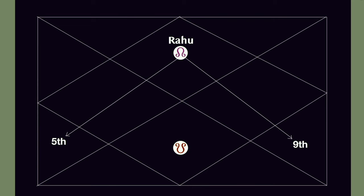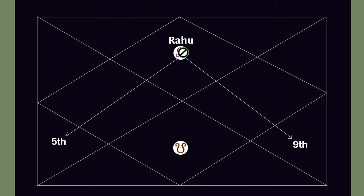Looking at the chart, you see Rahu has fifth and ninth aspects. This is the fifth aspect of Rahu. We are taking the first and seventh axis as an example — this is a blank chart, any chart. So if Rahu sits here, its fifth aspect is looking at the fifth house, and its ninth aspect is looking at the ninth house from the first. So this being one, this being fifth, this being ninth.